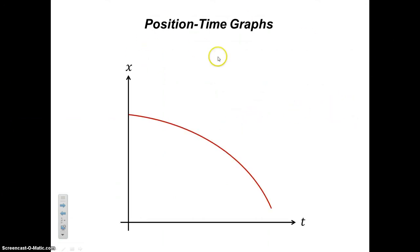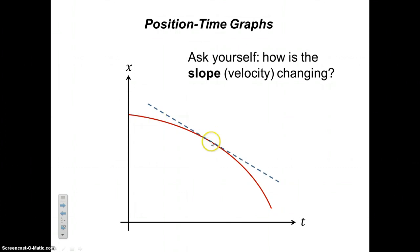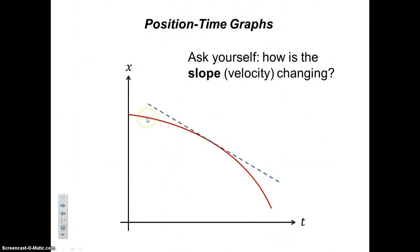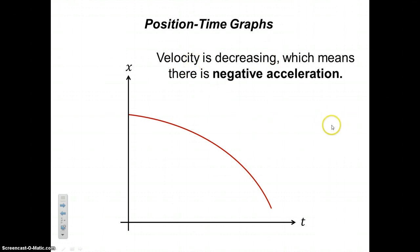Here's the last one for position-time graphs. We look at the tangent line at a point, then later, then even later. Early on, the slope is clearly negative, not too steep. A little later, it's still negative but a little steeper. And here, it's still negative but even steeper — it's getting more and more negative. The slope getting more and more negative means the velocity is getting more and more negative, so the velocity is decreasing, and that indicates negative acceleration.